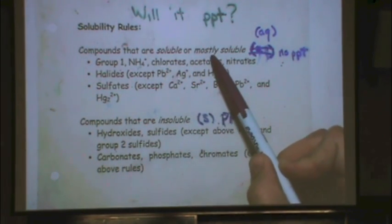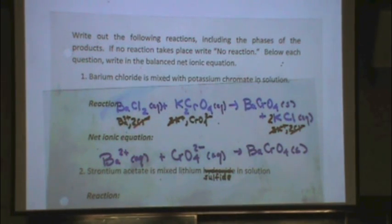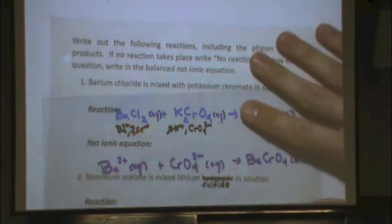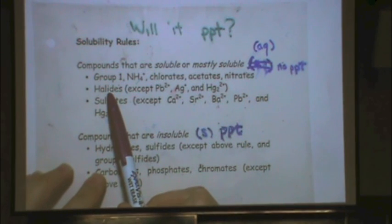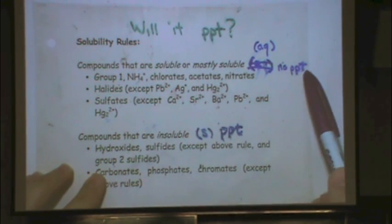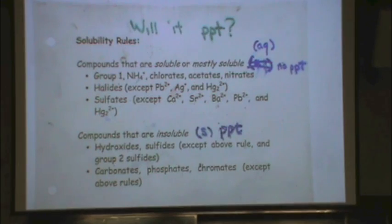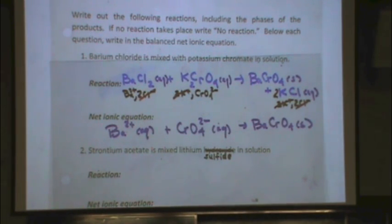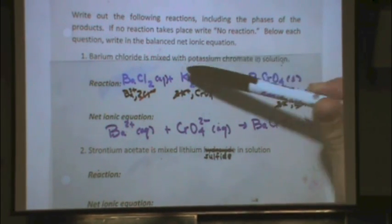Likewise, soluble, mostly soluble, aqueous, and no precipitate all go together. I knew barium chloride was aqueous because halides — chloride is a halide — are aqueous, soluble, no precipitate. So all halides: fluorine, bromine, iodide, etc. Also, another way I could have known: by reading the question. If something is mixed with another thing, both reactants must be aqueous.